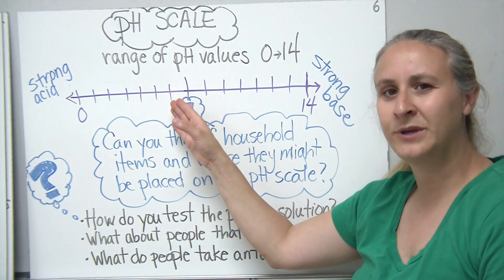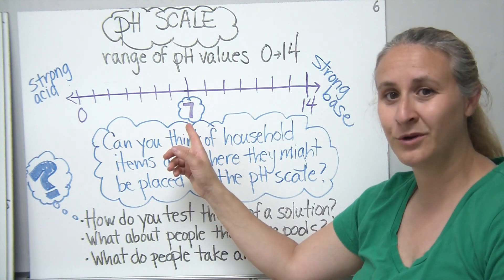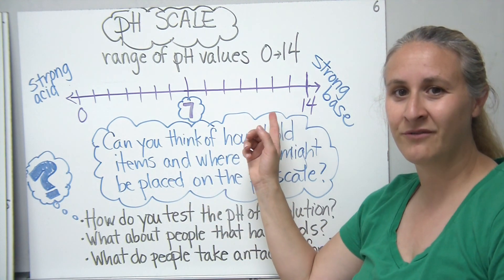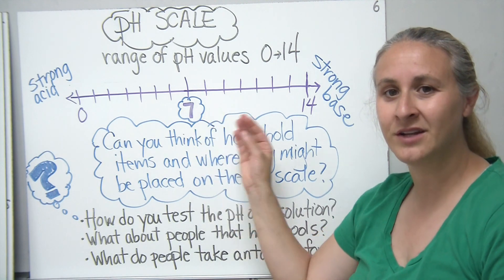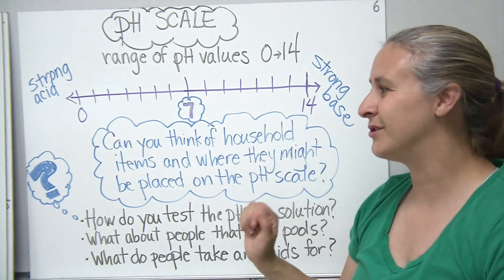So neither acidic or basic. And as you get from 14 closer to 7, your strong bases become less basic, closer to neutral.